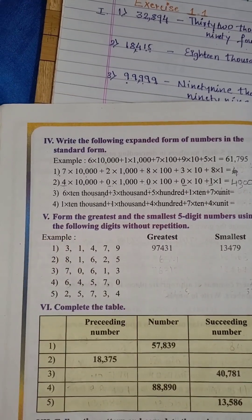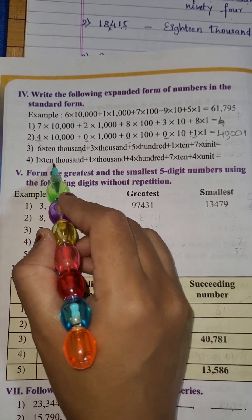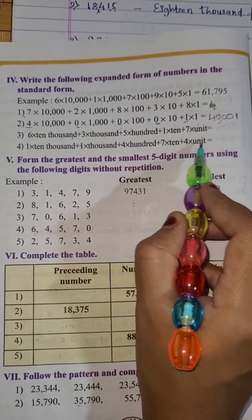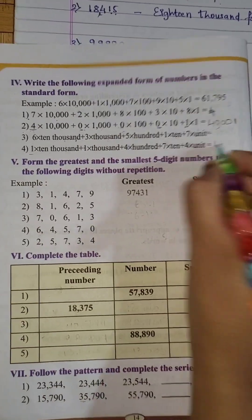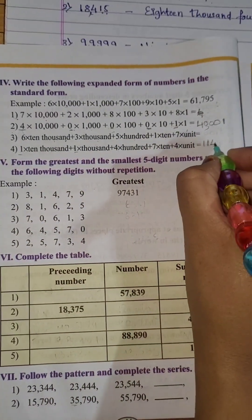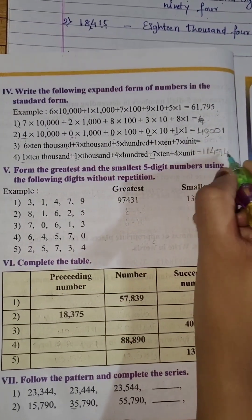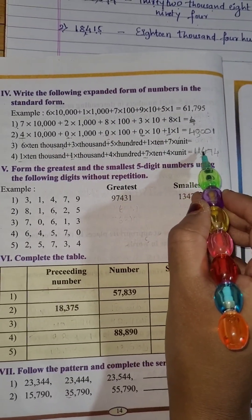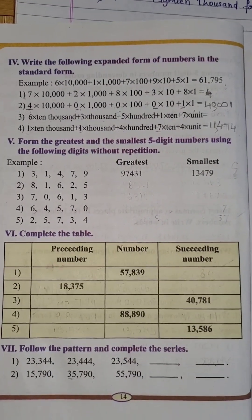So let's move to the next one, the fourth one: 1 into 10,000 plus 1 into 1000 plus 4 into 100 plus 7 into 10 plus 4 into unit. Directly write the numbers: 1, 1, 4, 7, 4 — put the comma — and your answer is 11,474. This is how you can solve it. Is that clear?